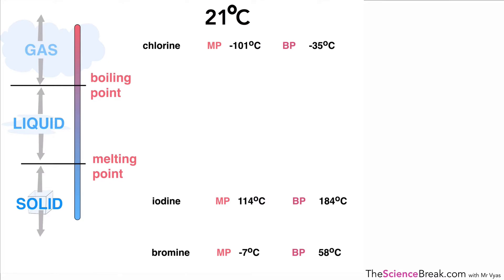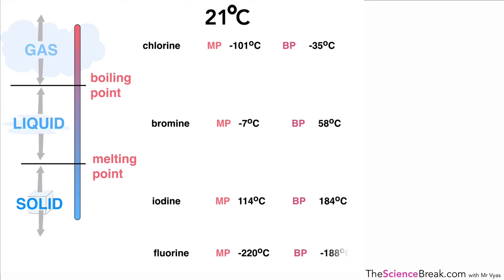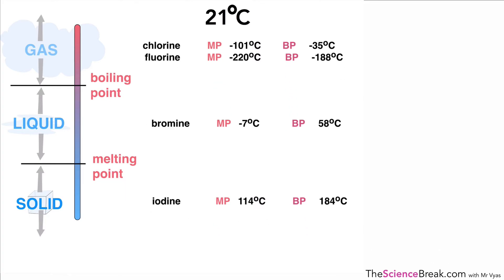Bromine melts at −7°C and boils at 58°C, so at 21°C it's past its melting point but hasn't reached its boiling point — meaning bromine is a liquid at 21°C. Fluorine melts at −220°C and boils at −188°C, so at 21°C that's well above its boiling point, and fluorine is a gas.